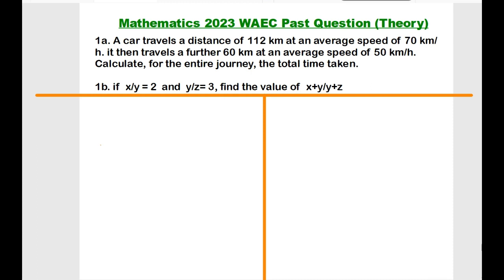To find the total time taken for the entire journey, we first calculate the time taken for each leg of the journey, then add it to the data. So now we will do this. We will find the first part of the journey, and the first part of the journey, let's make this part of journey to be T1.